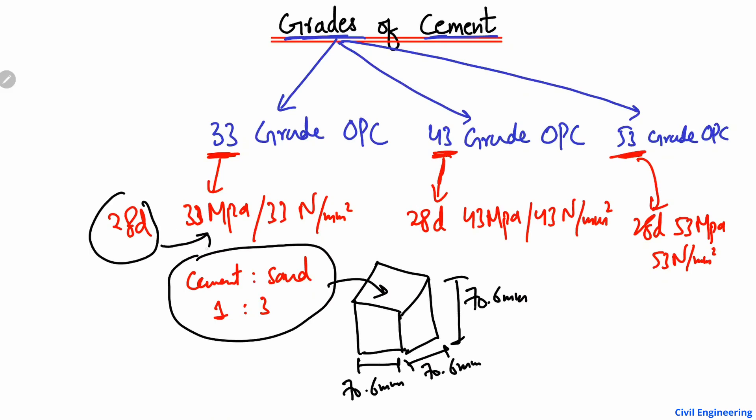Under 28 days of curing, when the cube achieves a strength of 33 MPa, we call it 33 grade cement. When it achieves 43 MPa, we call it 43 grade Ordinary Portland Cement, and when it achieves 53 MPa, we call it 53 grade cement. These strengths also vary depending on the age of the cement.